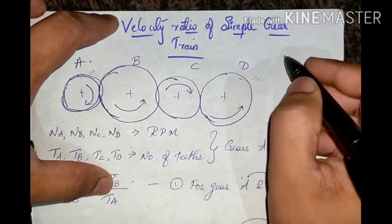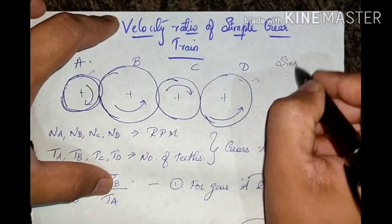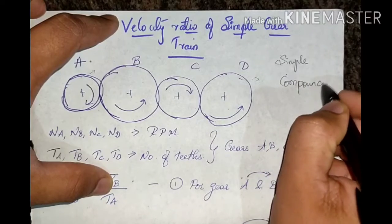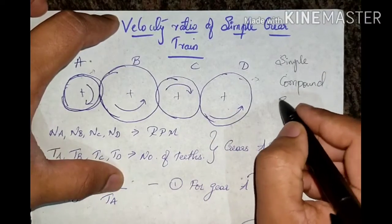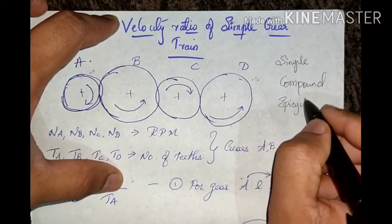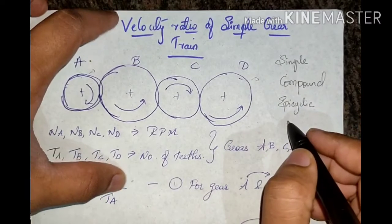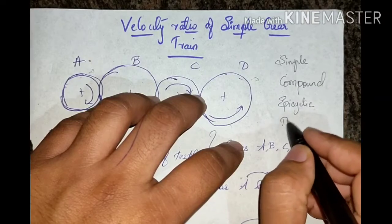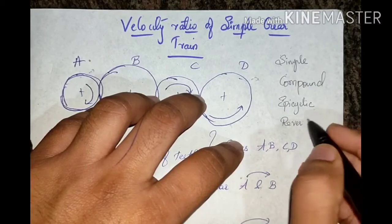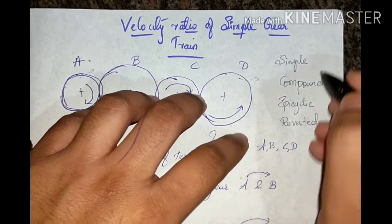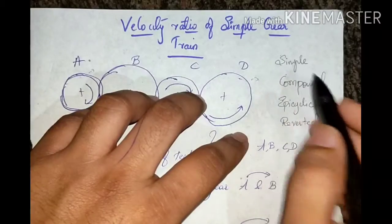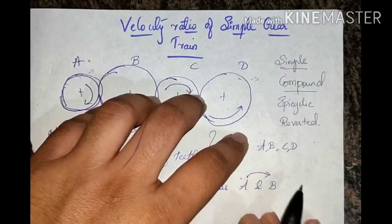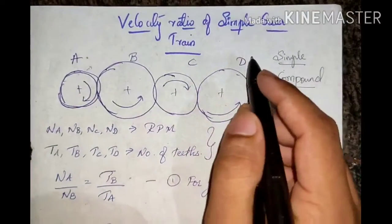The types of gear trains are: simple gear train, compound gear train, epicyclic gear train, and reverted gear train. For our understanding, we will focus on the simple gear train and compound gear train.